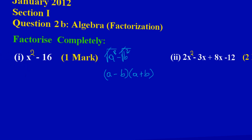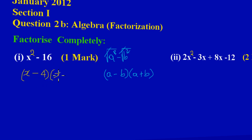Applying the same concept here: take the square root of x squared to get x, and take the square root of 16 to get four. So I put (x minus 4) in one bracket, and (x plus 4) in the other bracket — because I had a negative sign in the first, I put a positive sign in the second. That's how a difference of two squares is factorized.